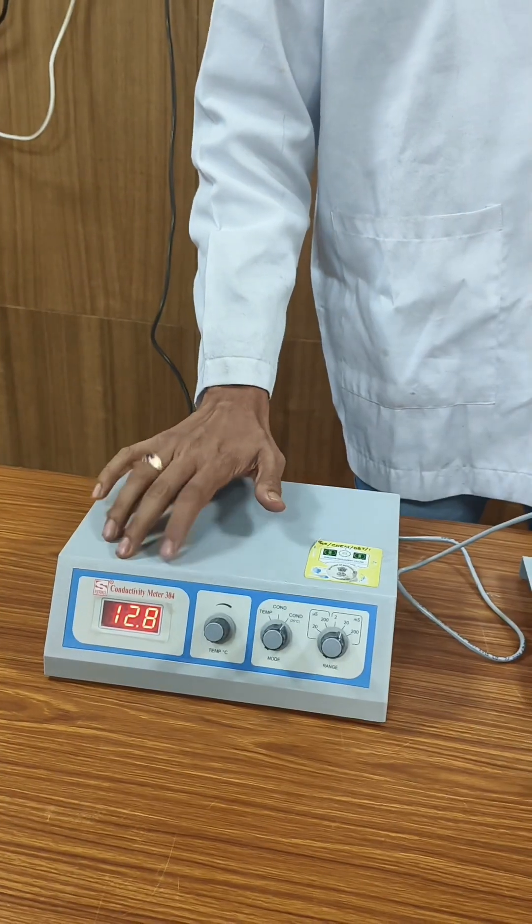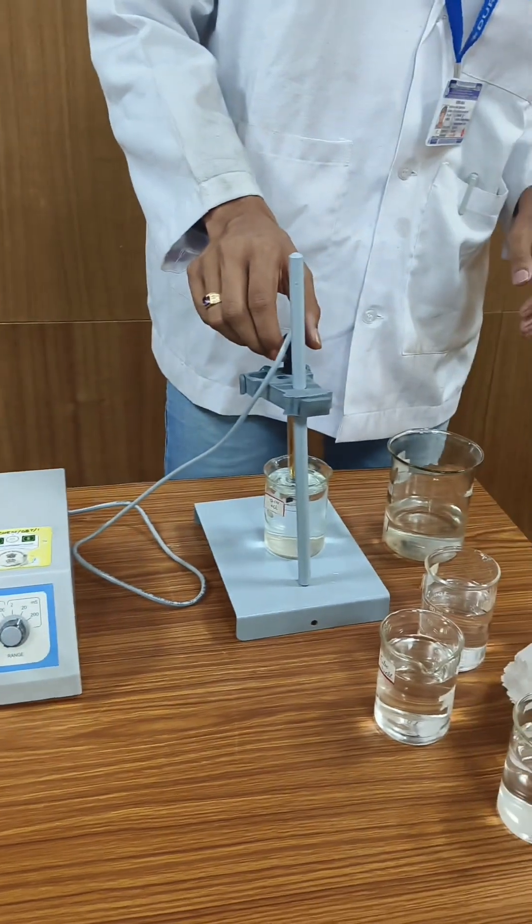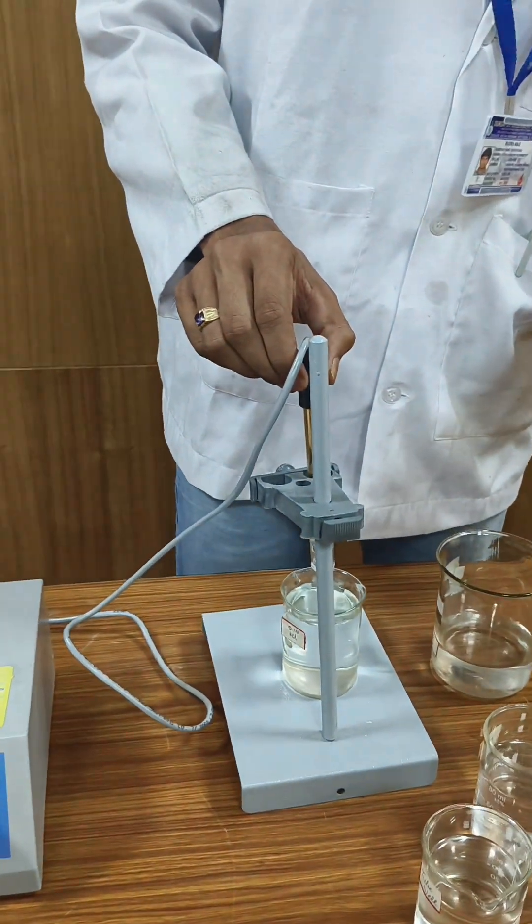Now we set the conductivity value and remove the electrode from the KCl solution.